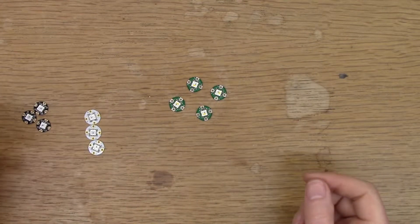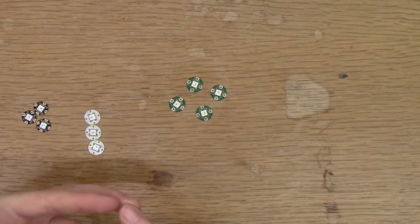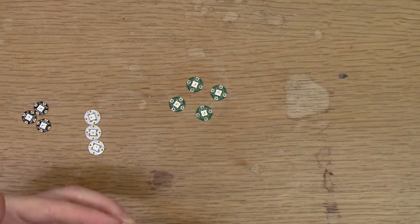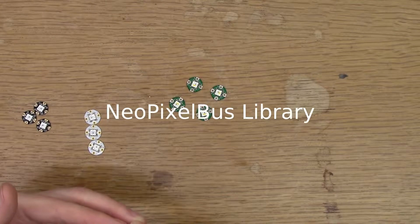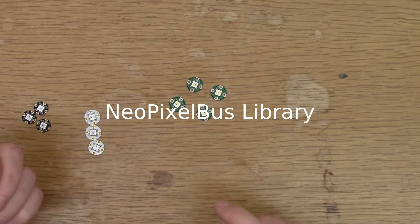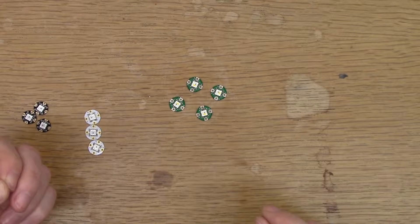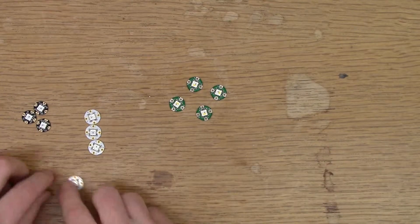Fairly straightforward. You can use the NeoPixel library from Adafruit. I've found a newer library that I'm really liking. It's called the NeoPixel Bus Library. I'd have to double check that. And it's a little bit more convenient to use. I just kind of like it. But they both work.